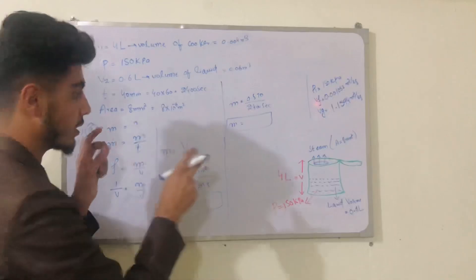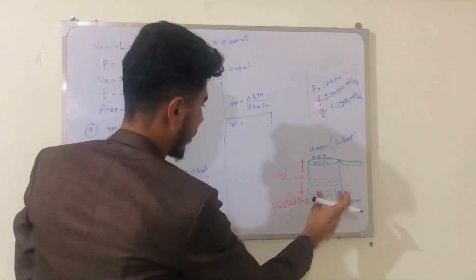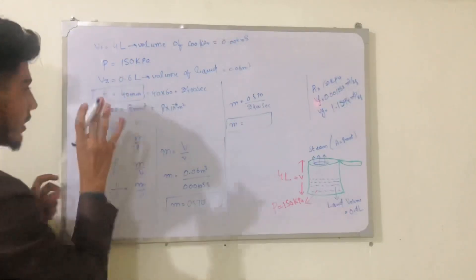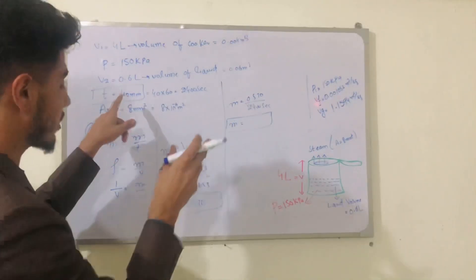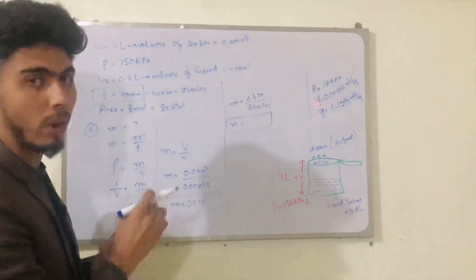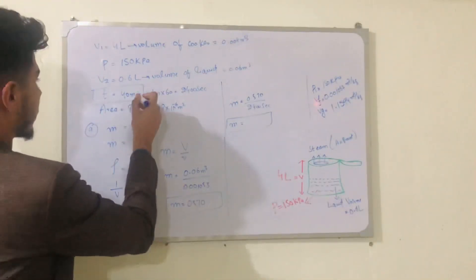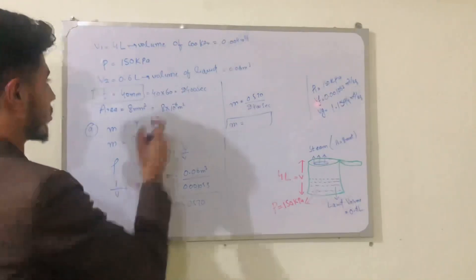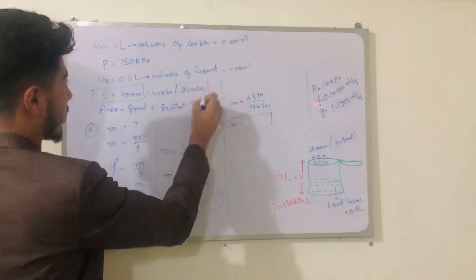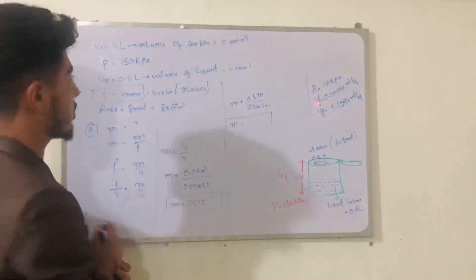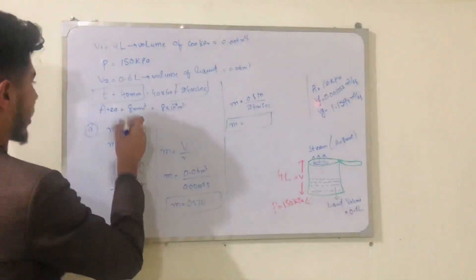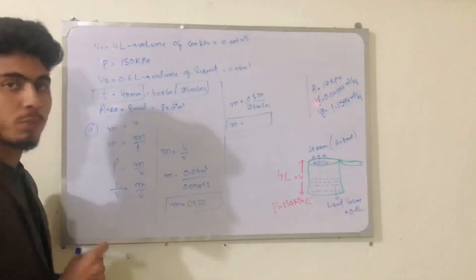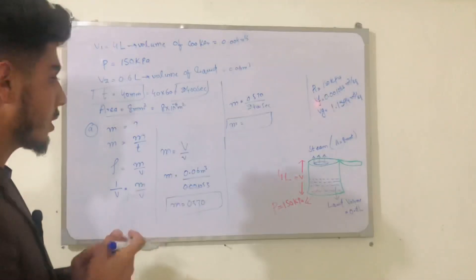The volume of liquid decreases over a time of 40 minutes. Converting 40 minutes to seconds: 40 multiplied by 60 equals 2400 seconds. The volume of liquid is 0.0006 meter cube and the cross-sectional area is 8 millimeter square, which equals 8 × 10⁻⁶ meter square.